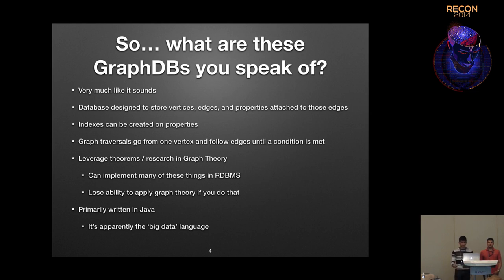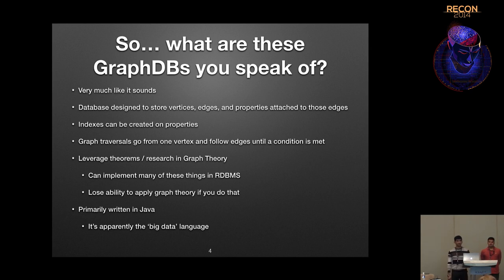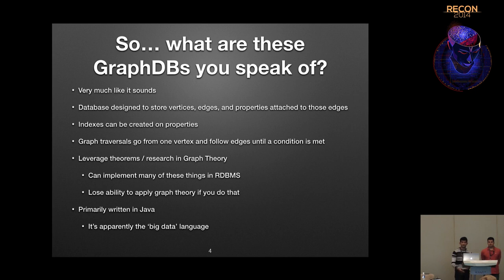So we're talking about graph databases — the clue's kind of in the title. It's a database of a graph, where a graph is a collection of nodes or vertices and the links between them, the edges. A graph can be directed, where an edge goes from one direction to another but not backwards, or undirected. You can also have cyclical or acyclical graphs. One of the nice things is you can take advantage of graph theory and apply it to understand how a program is executing, since a program is kind of like a tree graph-like structure.